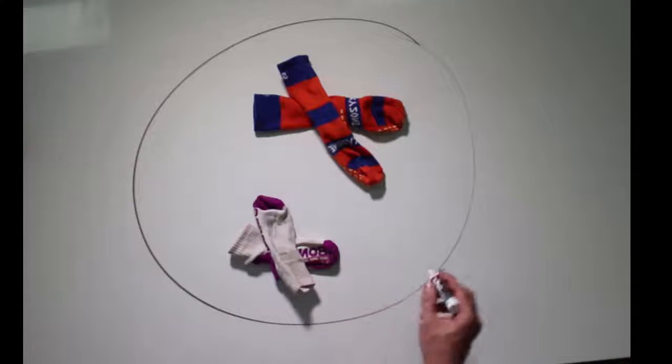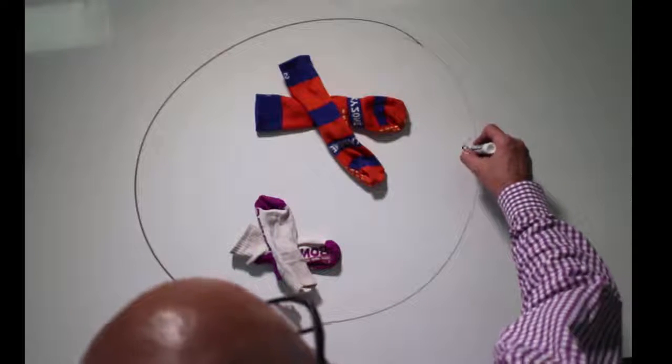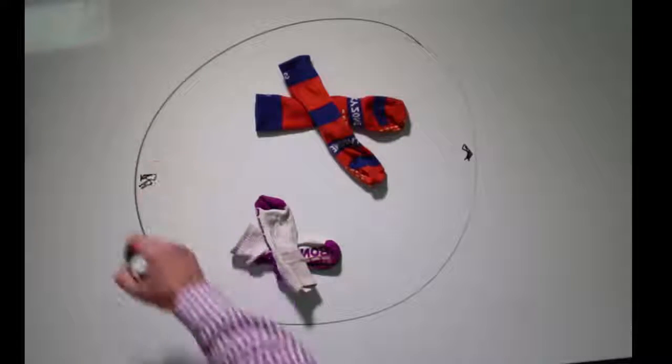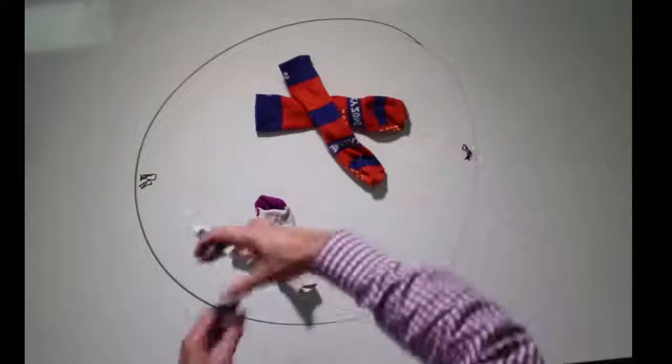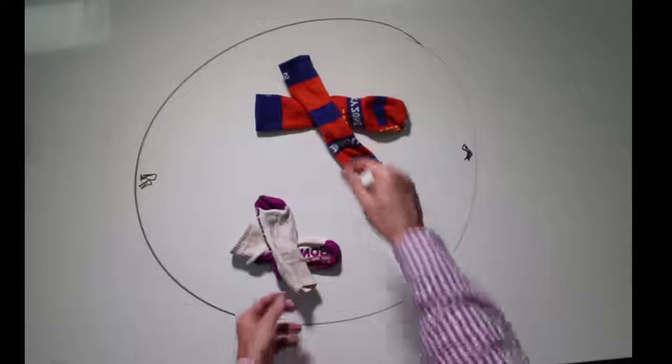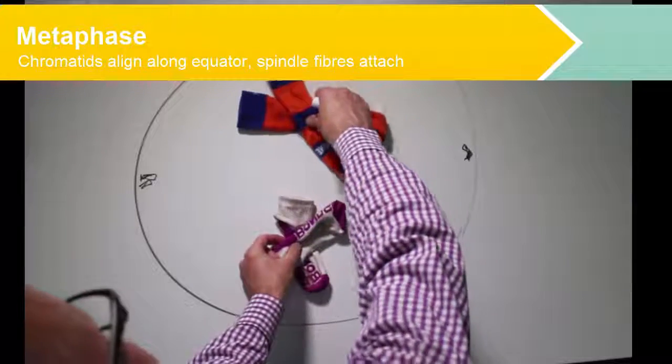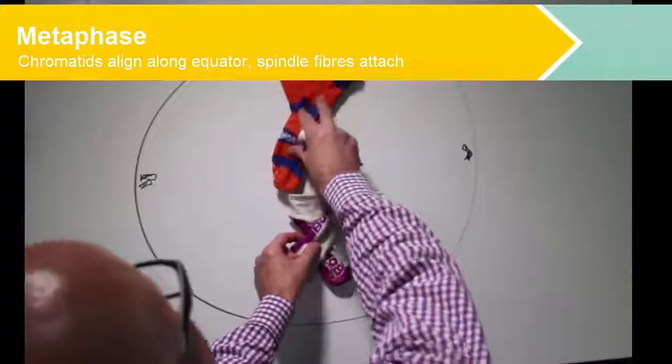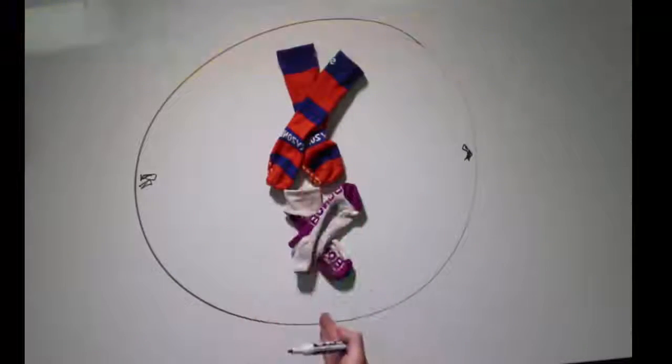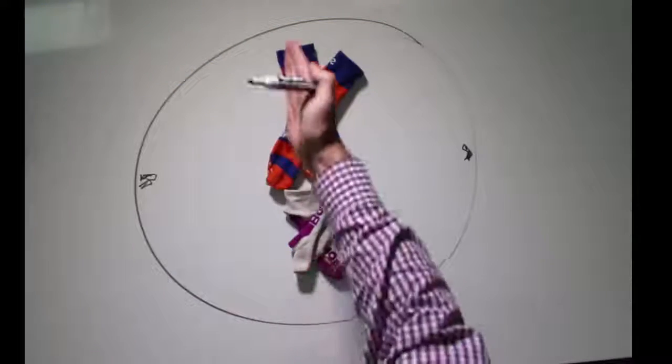Also we have centrioles that are forming here, and the nuclear membrane has been dissolved, ready for the next phase which is metaphase. In metaphase our chromosomes align themselves along the equator of the cell.